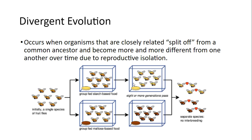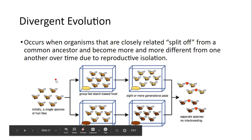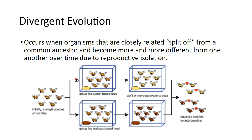Another example: starting with a single species of fruit flies, one group being fed starch-based food and the other group being fed maltose-based food. After a few generations, because the species could not interbreed and there was no gene flow between the two groups, they have now become reproductively isolated.